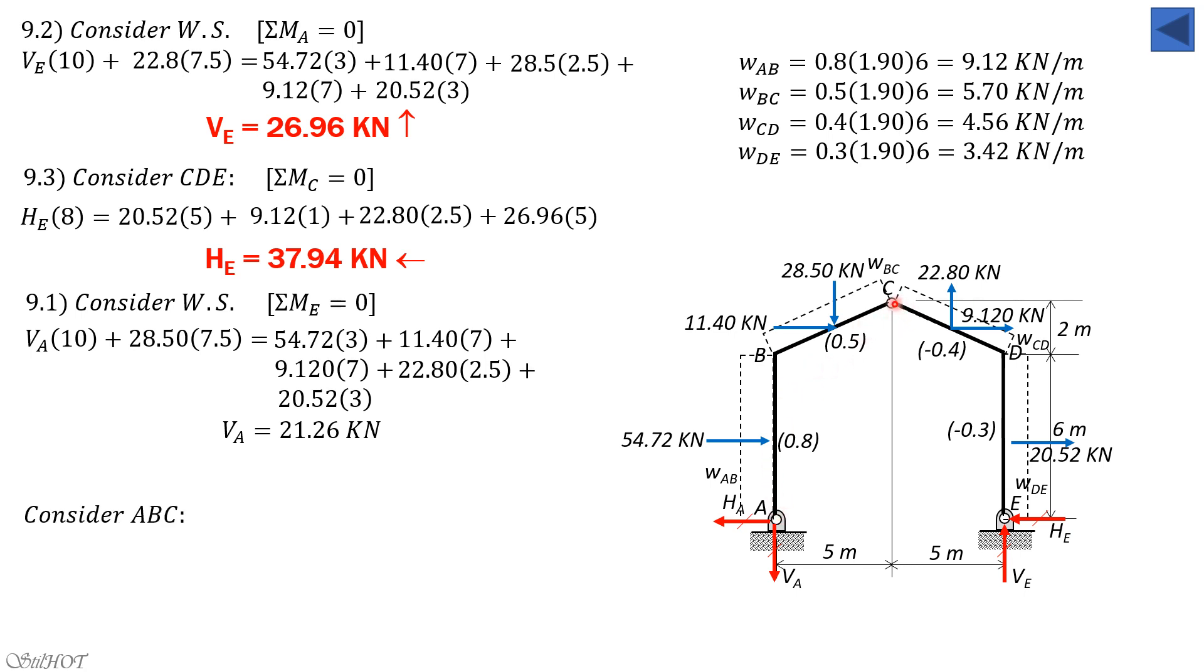Considering ABC, summation moment about C equals 0. Clockwise positive, so we have H_A times 8. These are all counterclockwise, so equals 54.72 times 3 plus 2, which is 5, plus 11.4 times 1, plus 28.5 times 2.5, plus V_A (which is 21.26) times 5. So solving for H_A, H_A is equal to 57.82 kilonewtons. It's your job to check summation forces horizontal should be 0. I will leave the checking for you: summation forces horizontal, summation forces vertical should equal 0.